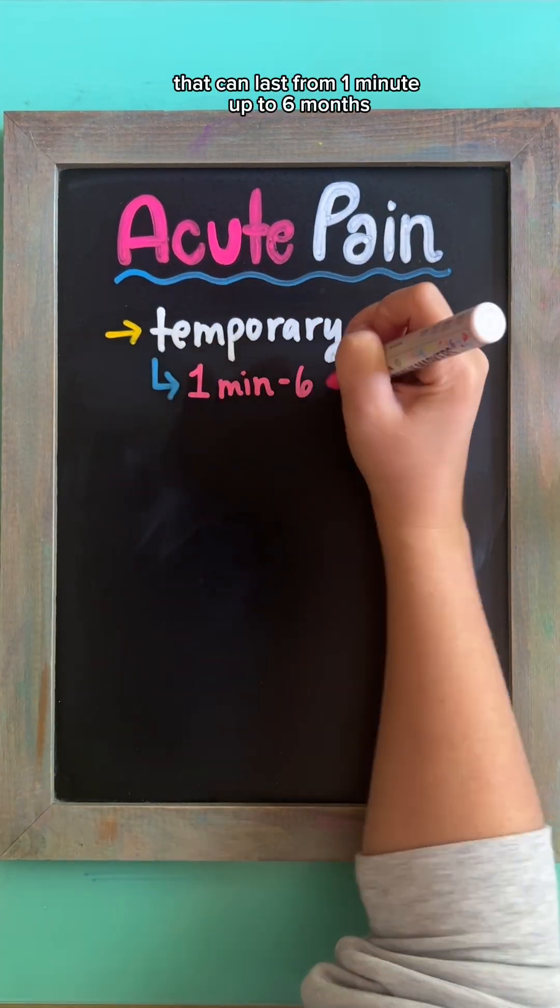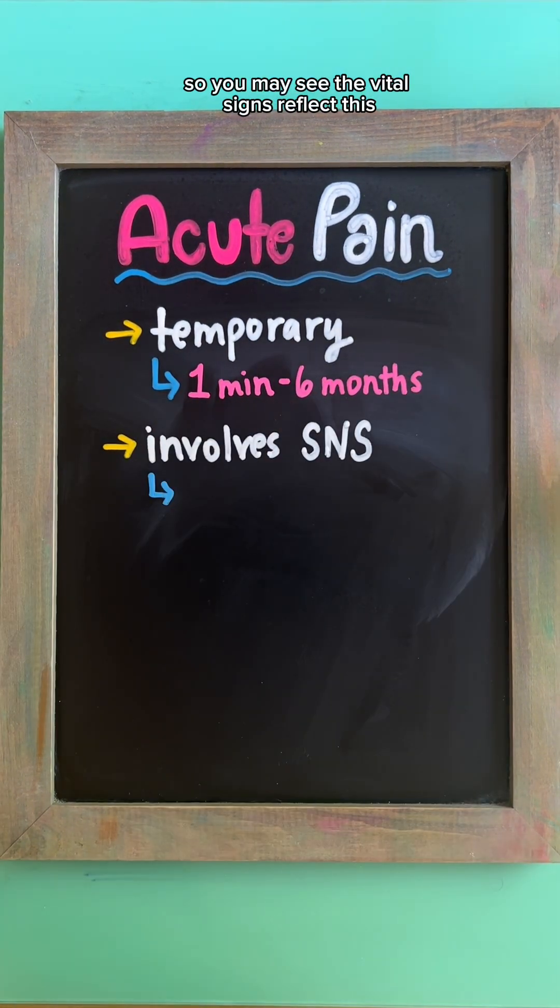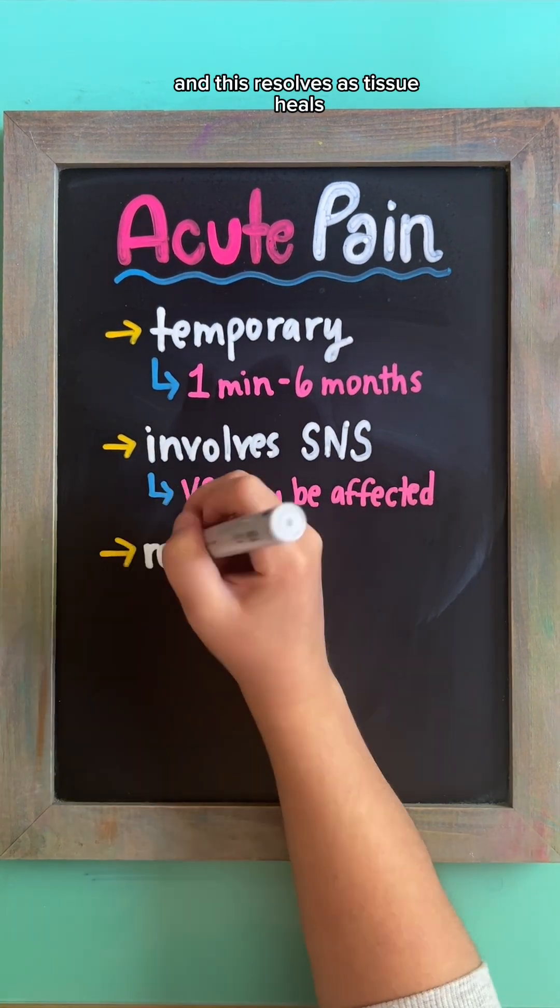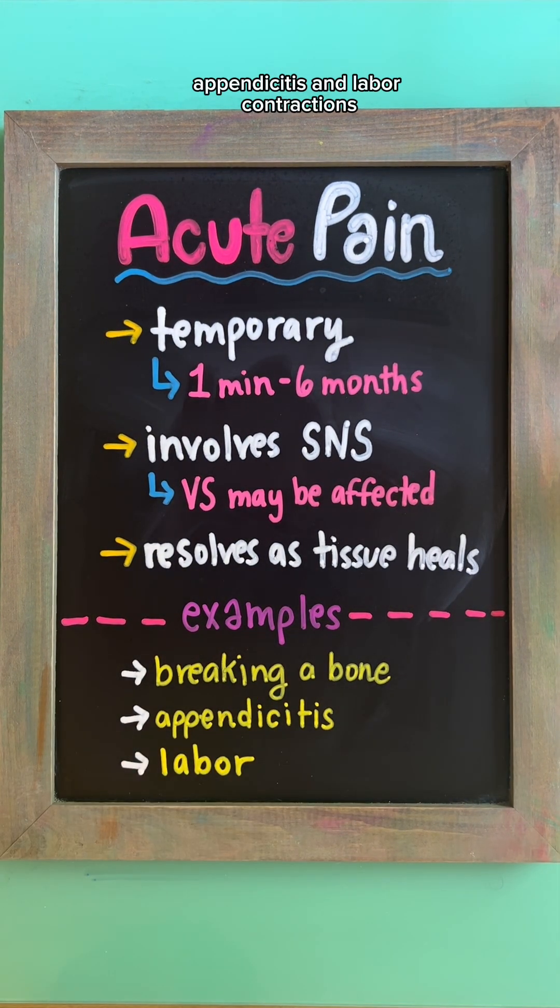Acute pain is temporary pain that can last from one minute up to six months. This involves the fight-or-flight response so you may see the vital signs reflect this, and this resolves as tissue heals. Examples of this are breaking a bone, appendicitis, and labor contractions.